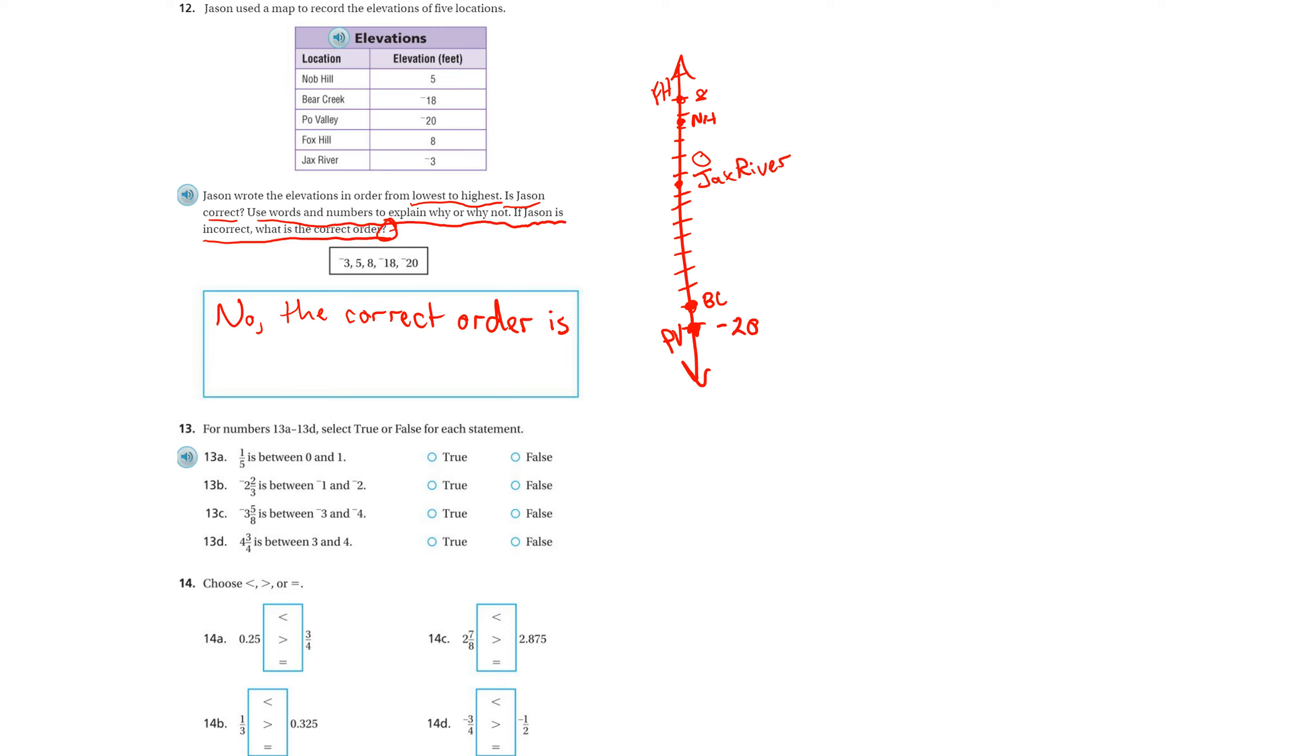Now to put them in order from lowest to highest elevations, we start at the bottom and go to the top. The bottom is negative 20. Then going up from there, we have Bear Creek at negative 18. My next point, Jack's River, that was negative three. Next point, Knob Hill, that's five. And my last point, Fox Hill, that was eight.